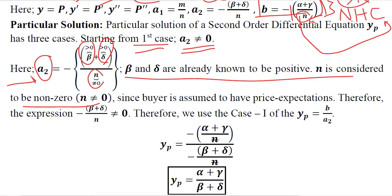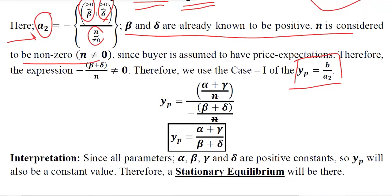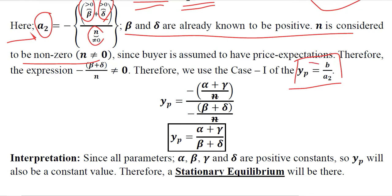Putting the value of b and a₂, we get this expression after cancellation of n. This is the particular integral of the time path of the price expectation-augmented market model.